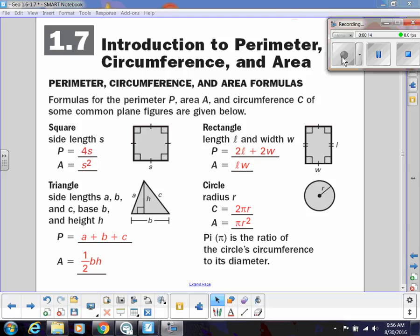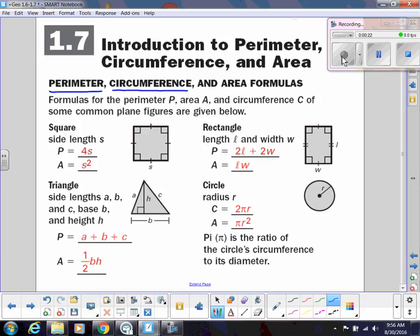Just a few reminders about perimeter. Remember, perimeter means the distance around a polygon. Same thing, circumference is also perimeter, it's just specifically perimeter of a circle. And then we have area is the amount of space inside of a shape.